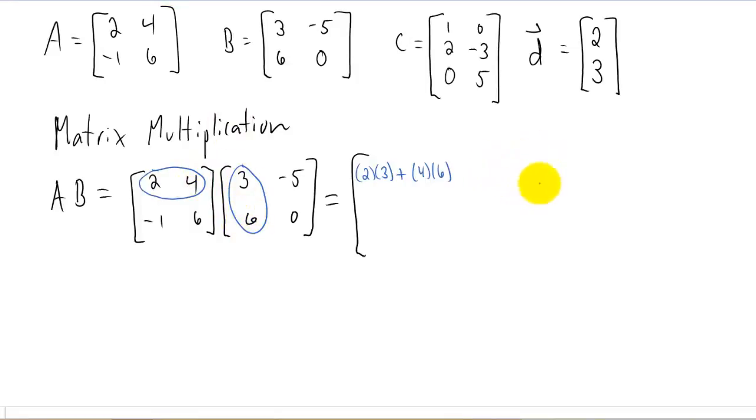To get our element of our matrix A times B, we're going to take the first row again except now we're going to do a dot product with the second column of B. Now we're looking for the 2, 1 element of our A, B matrix. And to get that, we're going to do a dot product of the second row of A with the first column of B.